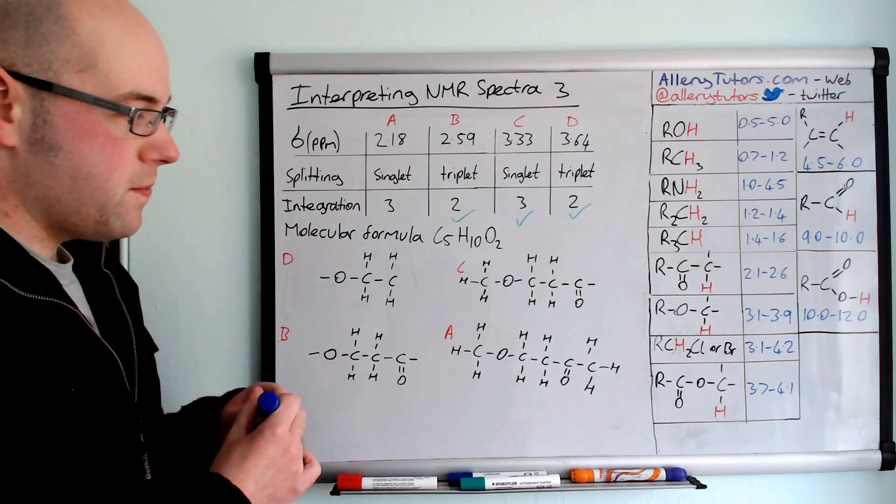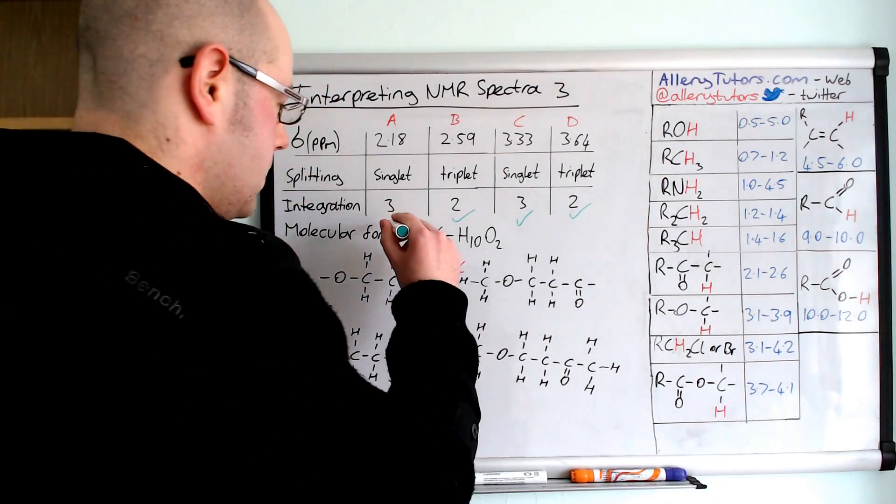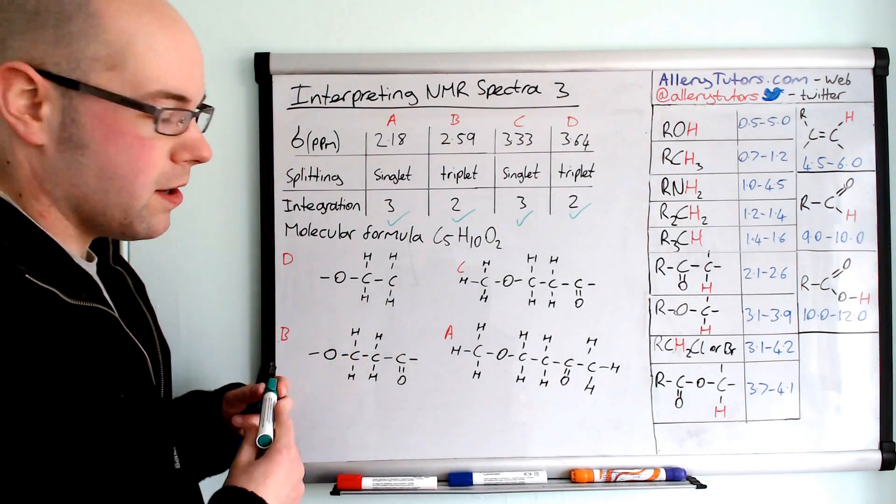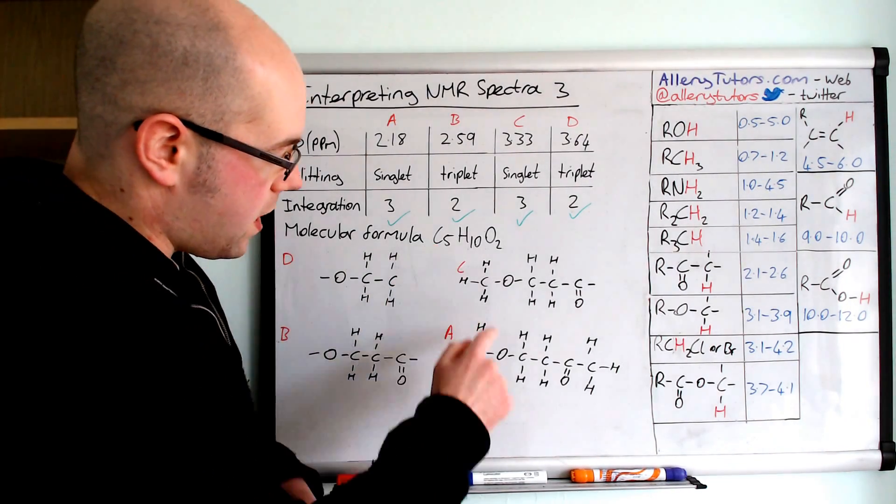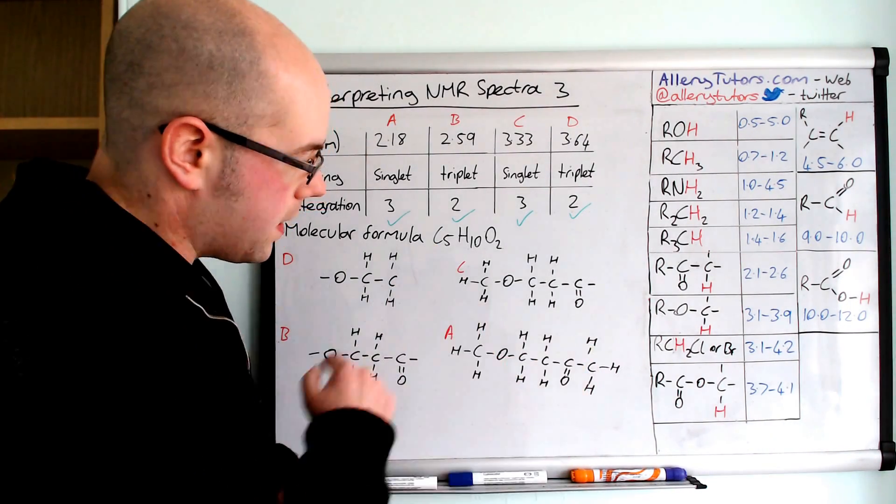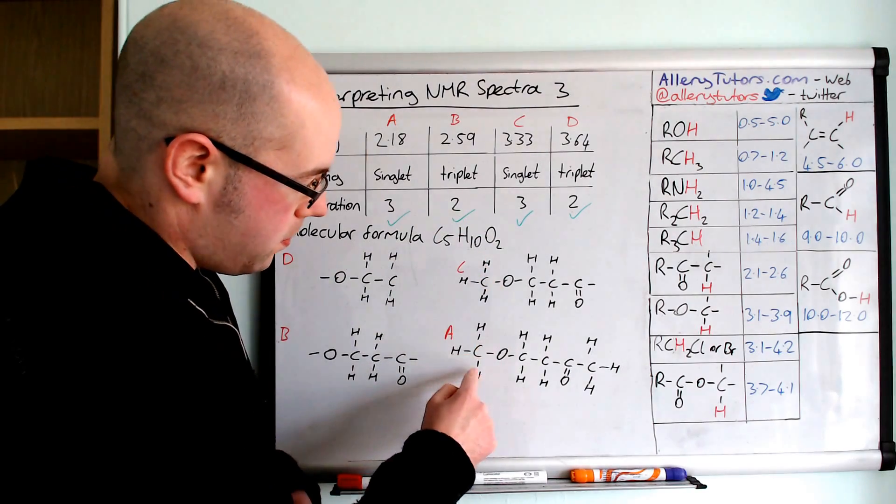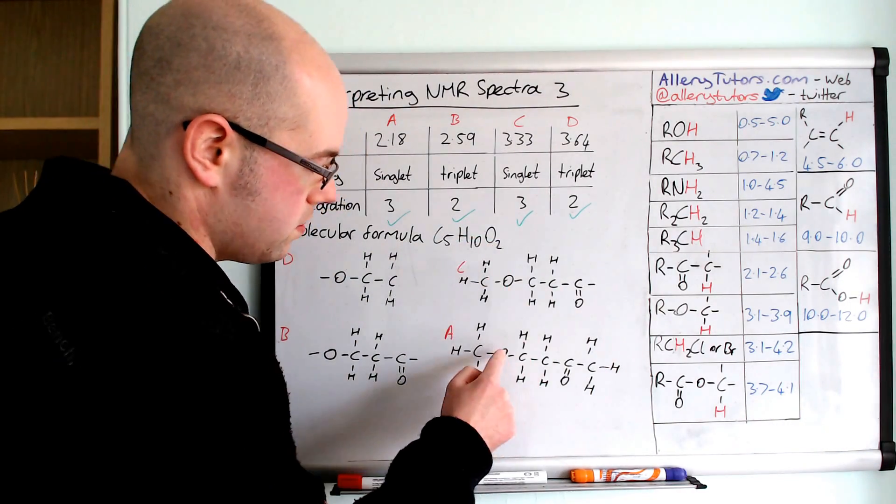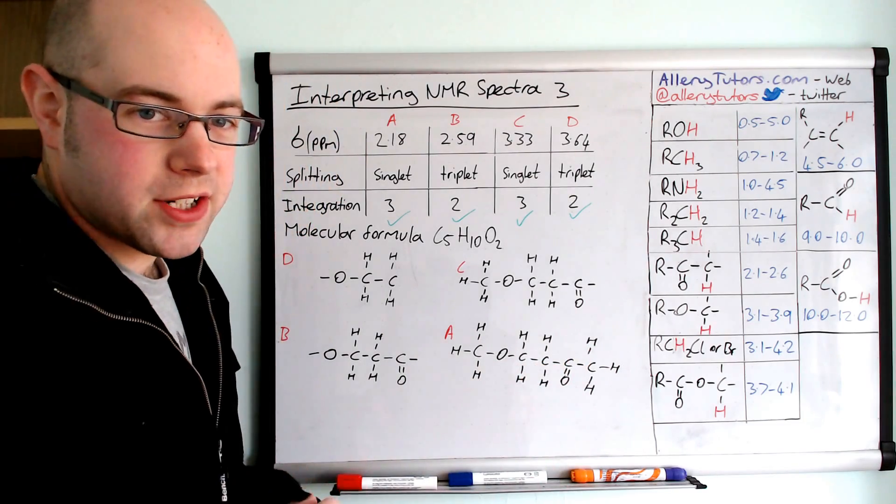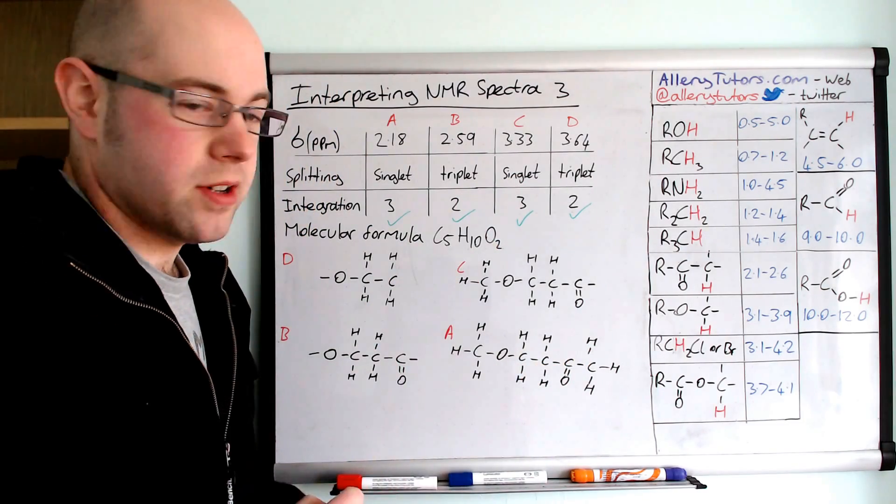If we just check again, make sure it matches our molecular formula. Always check that to make sure it works. So you've got C5: 1, 2, 3, 4, 5, that's fine. H10: 1, 2, 3, 4, 5, 6, 7, 8, 9, 10. And then O2: 1, 2. And it matches because we've checked it off and make sure that it fits.